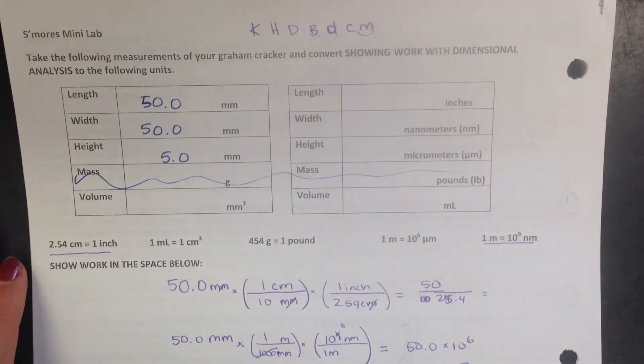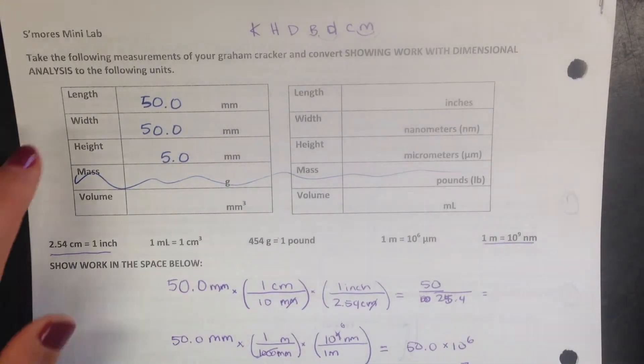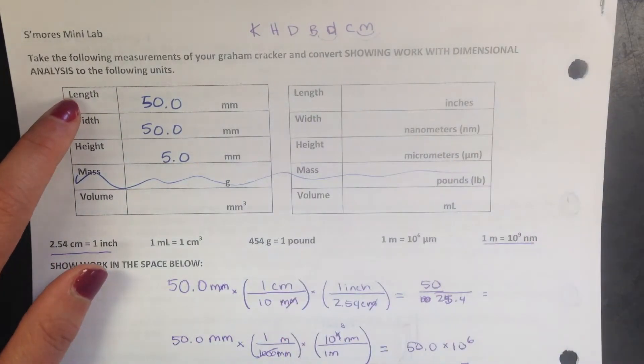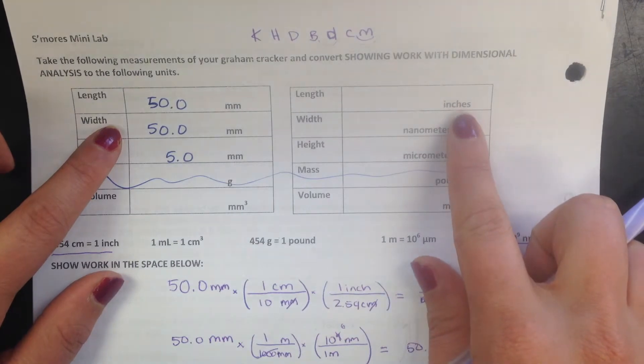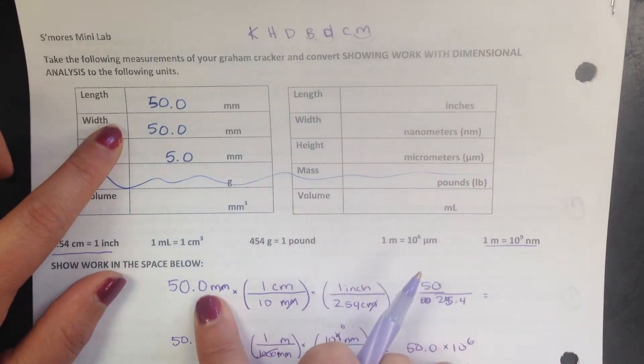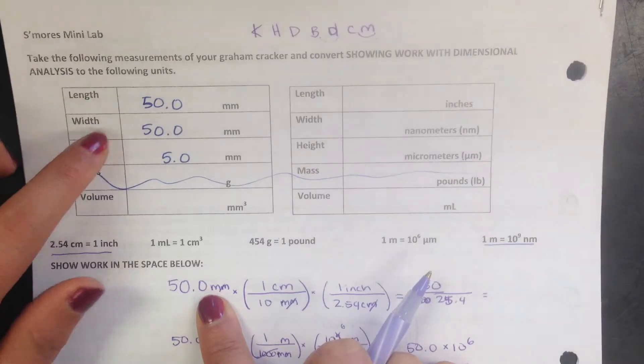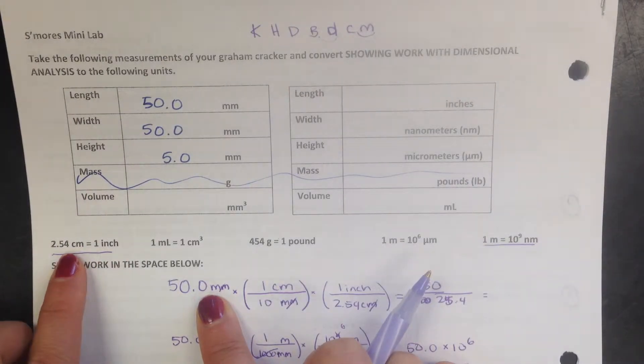Okay, this video is to review the dimensional analysis that we did for the s'mores. So we had these measurements of a graham cracker and we had to convert from millimeters to inches. You always start with a given, which is 50 millimeters, and then I looked over here and I saw that my equality to inches has centimeters, so I have to go from millimeters to centimeters before I can go from centimeters to inches.